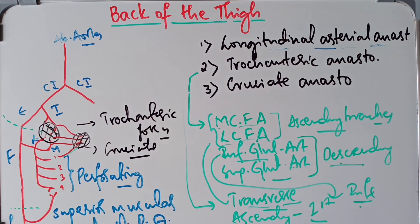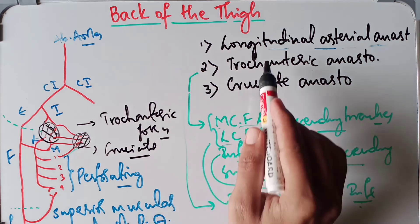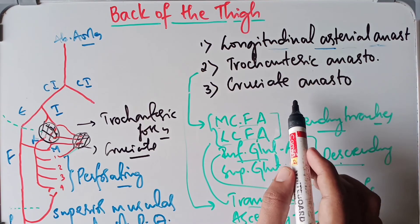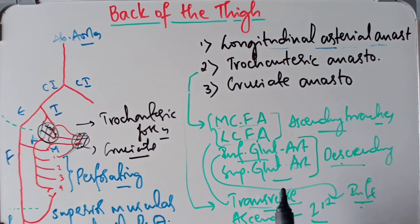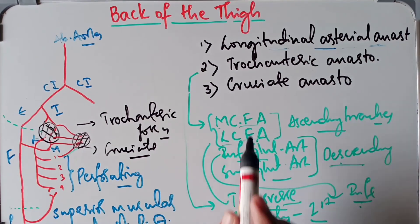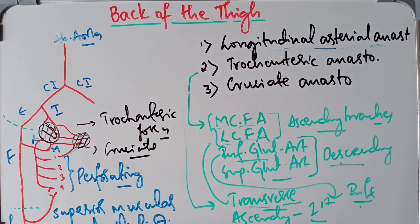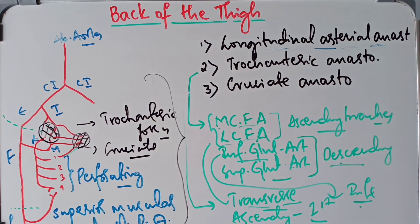This covers the anatomy of the arterial anastomosis on the back of the thigh, formed by the longitudinal arterial anastomosis, the trochanteric anastomosis, and the cruciate anastomosis. We have also discussed the different branches of the arteries taking part in these anastomoses and the main arterial supply to the back of the thigh. Thank you — if you liked this video, please subscribe, hit the like button, and share it with others who want to learn more about anatomy.